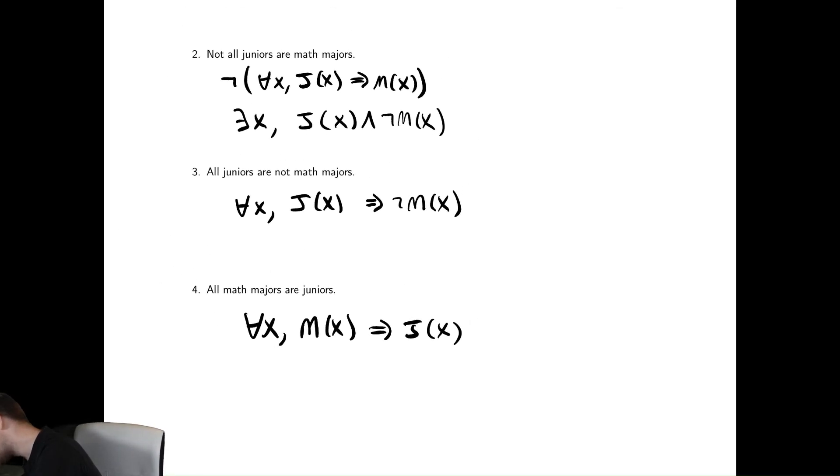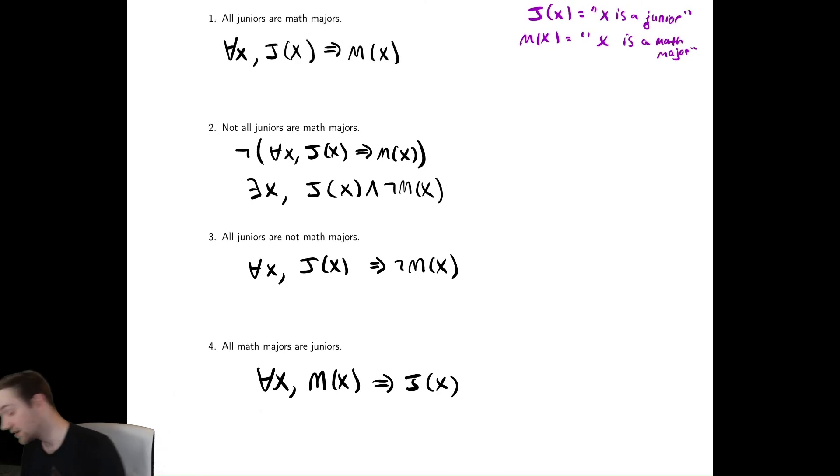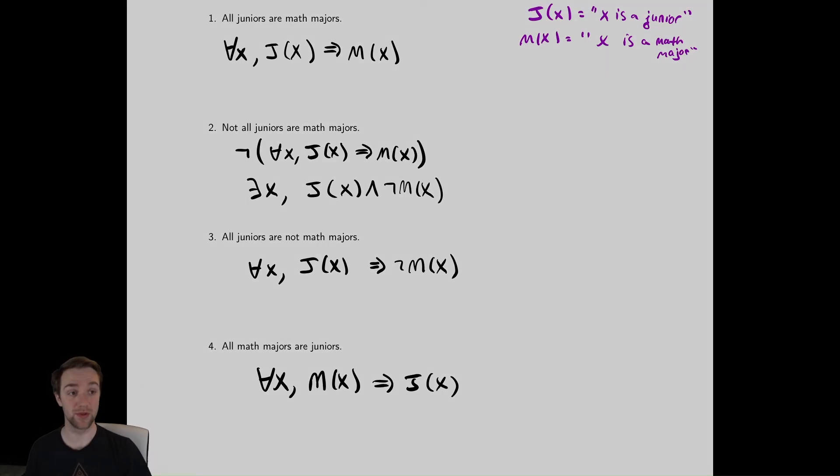And if we zoom out, we can now look at these four examples that are all very similar, but slightly different. And all are translated into different predicate statements. So you need to be careful about reading English and finding out what is it trying to say. It's trying to say all things of this type are that type. Is it trying to say that not all things of a certain type are a certain type? Or where are the negations of the problem showing up?